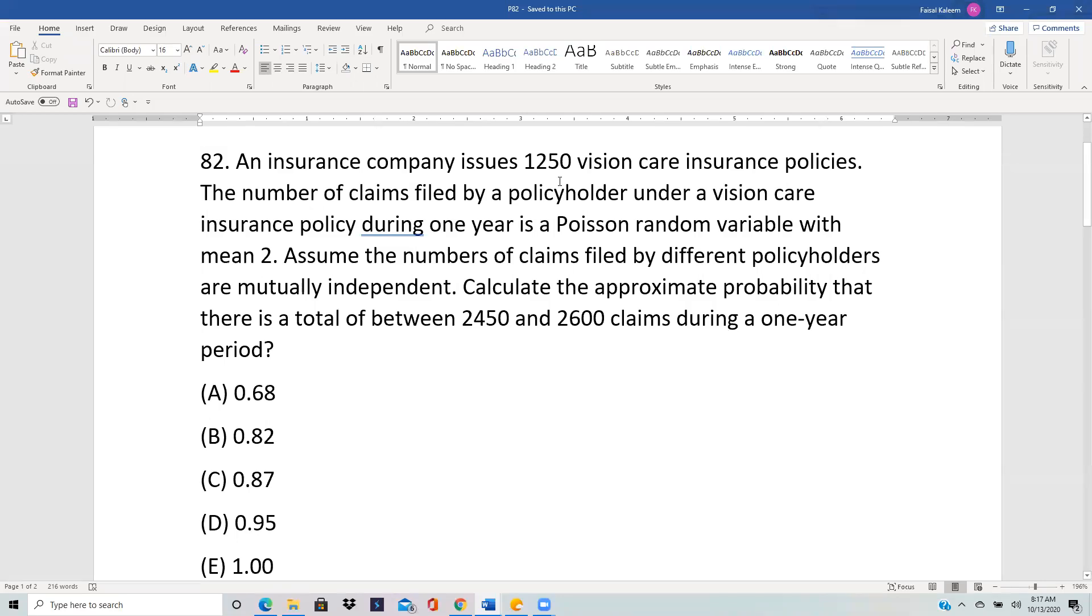An insurance company issues 1250 vision care insurance policies. The number of claims filed by a policyholder during one year is Poisson with mean 2. Assume number of claims filed by different policyholders are mutually independent. Calculate the approximate probability that there's a total of between 2450 and 2600 claims.